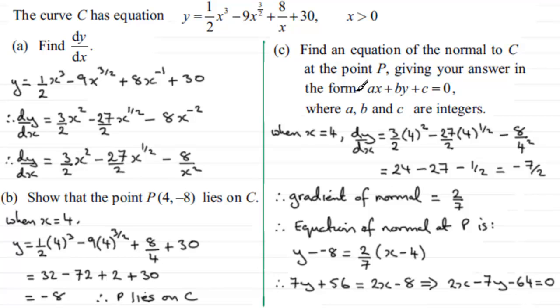That is in the required format. A would be 2, B would be -7, and C would be -64, if we were asked to state those values. I hope this gives you some idea how to approach that question.